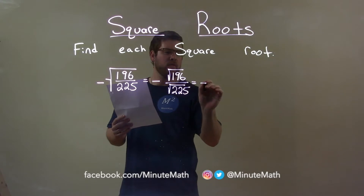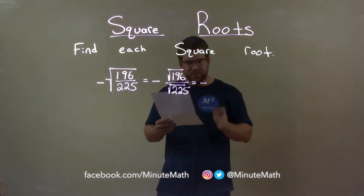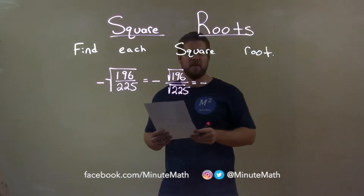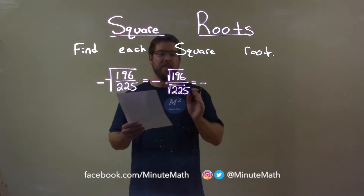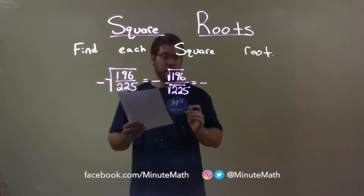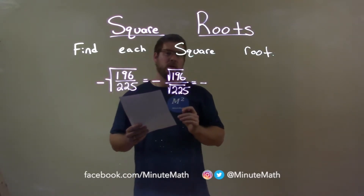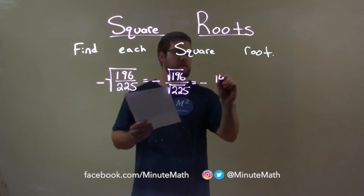Let's bring the negative over right now so we don't forget it. What number times itself is 196? That answer is 14. So the square root of 196 is 14.